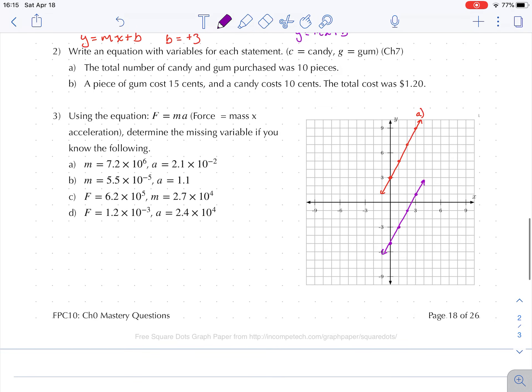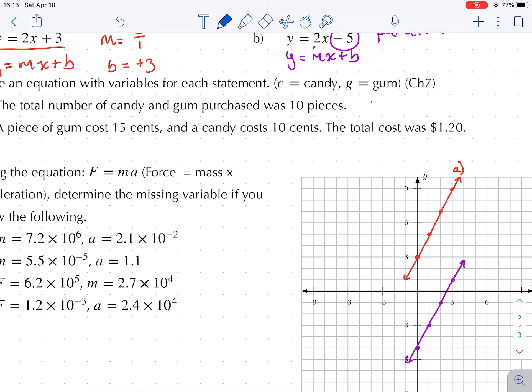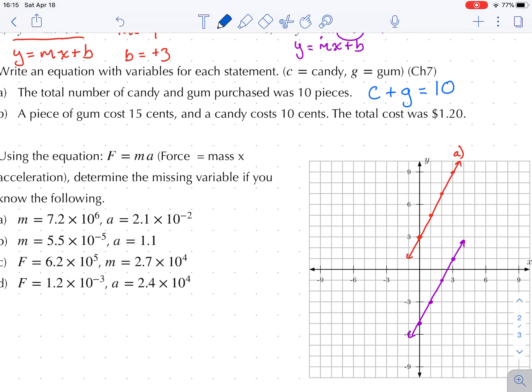Number 2: Write an equation with variables for each statement. C is candy, g is gum. The total number of candy and gum purchased was 10 pieces. So the total amount of candy and gum was equal to 10 pieces, so the amount of candy we bought plus the amount of gum we bought is equal to 10 pieces. All right. A piece of gum cost 15 cents and candy cost 10 cents. The total cost was $1.20.